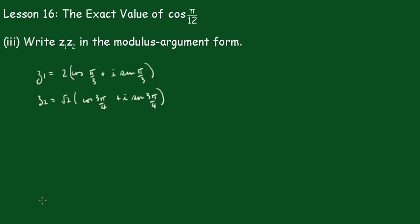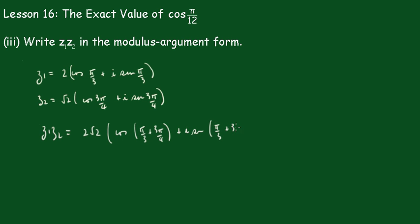In part 3, we write z1z2 in modulus-argument form. Pause the video and do this. You should have z1z2 equal to 2 root 2 — multiplying the moduli together — and then we add the arguments: cos(π/3 plus 3π/4) plus i sin(π/3 plus 3π/4). When you add those together you get 2 root 2 cis(13π/12).